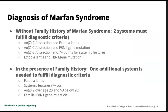For the diagnosis of Marfan syndrome, this used to be primarily a clinical diagnosis, but now we use many more molecular tools. Without a family history, you need two systems involved: either an enlarged aorta or dissection and ectopia lentis, an enlarged aorta or dissection and a fibrillin gene mutation, an enlarged aorta or dissection and seven points of systemic features, or ectopia lentis and a fibrillin mutation.